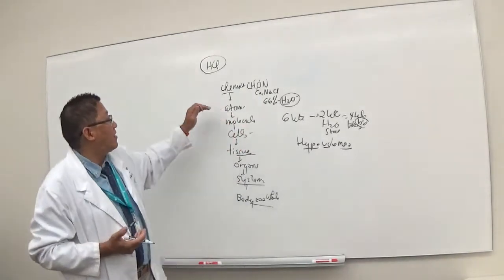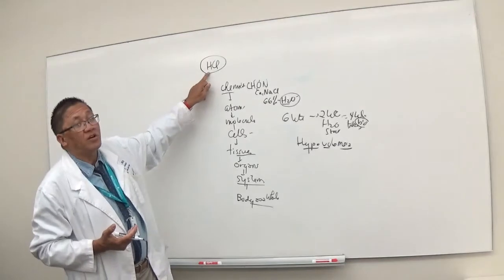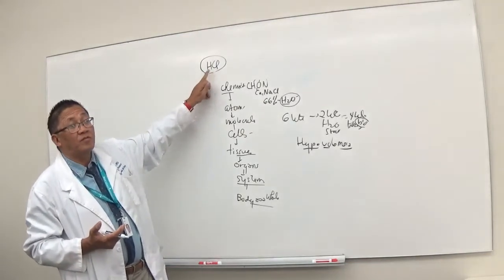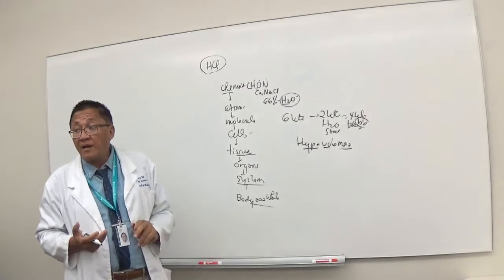So again, we need to know a little bit of atoms and molecules. So this is a molecule made up of one atom of hydrogen and one atom of chlorine. Do you understand?